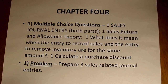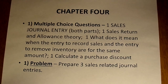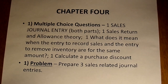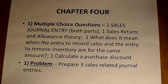On the other hand, a sales allowance only has one journal entry — the one reducing the sale and reducing accounts receivable. One multiple choice question will ask: what does it mean when the entry to record sales and the entry to remove inventory are for the same amount? That can't happen unless you're wrong or the company is run poorly, because if the sale price and the cost are the same, who's going to pay for the lights and salaries? The last multiple choice question is: calculate a purchase discount — given an invoice amount, calculate the discount or how much cash the company receives.